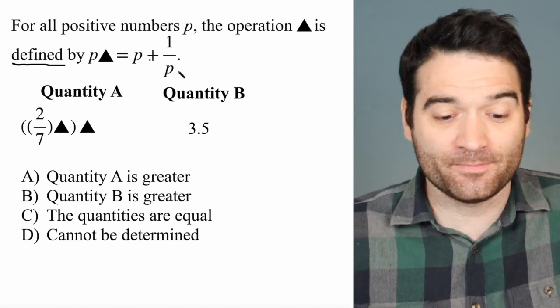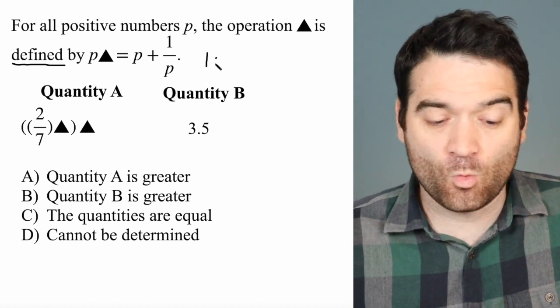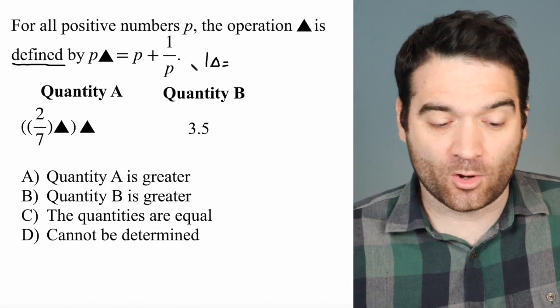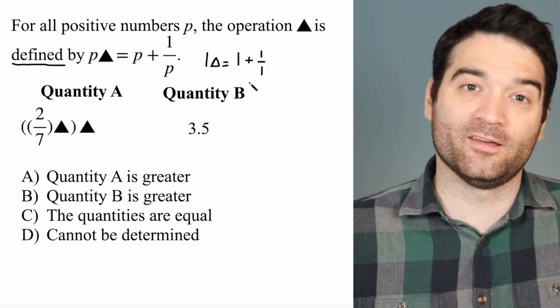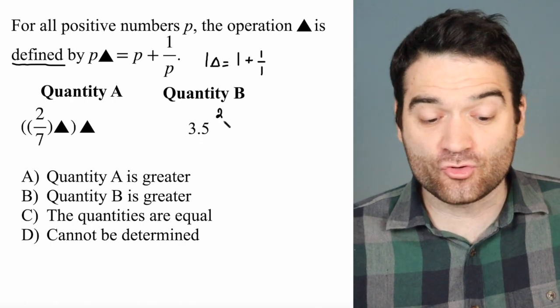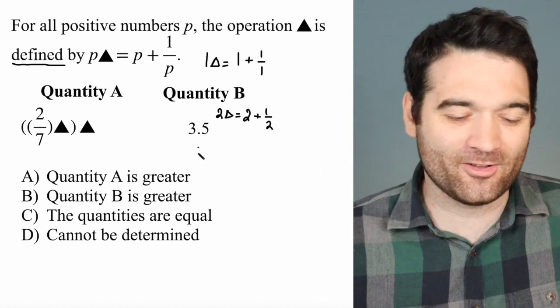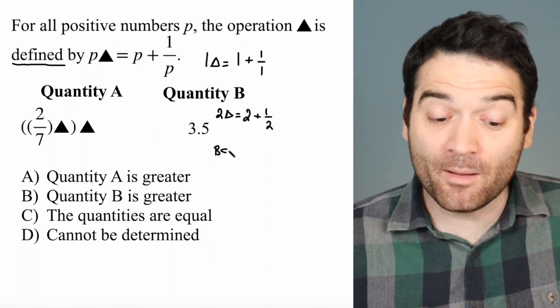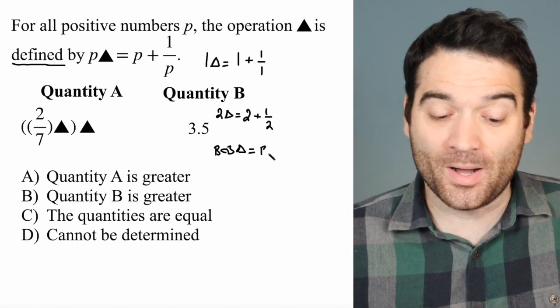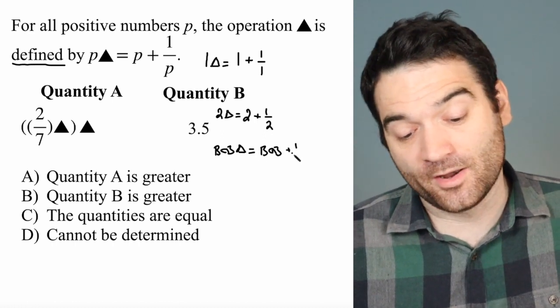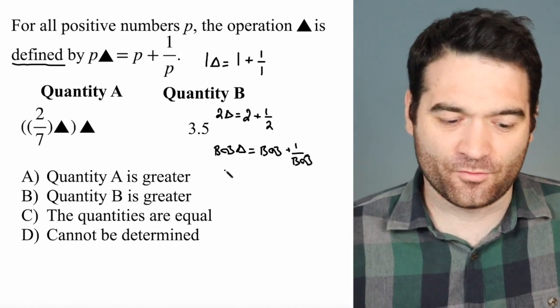So this is a generic construction, but let's use a specific example. 1 is a positive number, right? So 1 triangle, according to this, would equal 1 plus 1 over 1. And 2 triangle would equal 2 plus 1 over 2. Yeah, you're starting to get the hang of it, right? And Bob triangle, just to be very generic here, would equal Bob plus 1 over Bob. And so on and so forth.